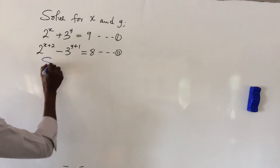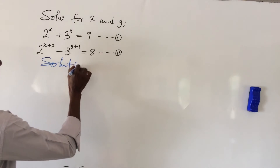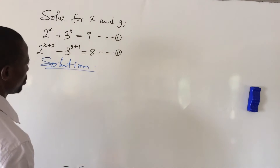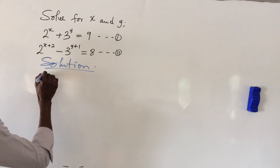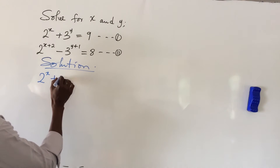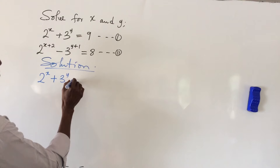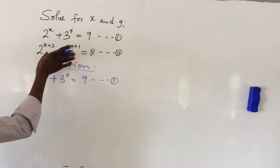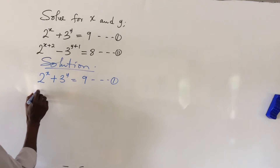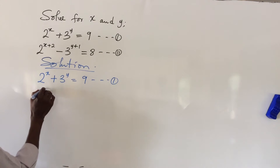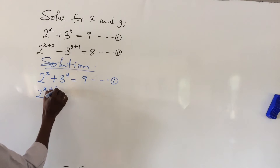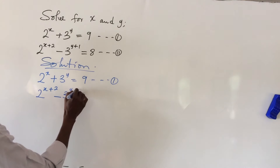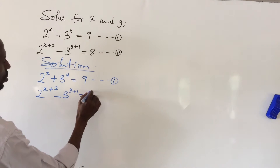Let's take our solution. We write our equation one, which is: 2 to the power of x plus 3 to the power of y equals 9. Then we have equation two, which is: 2 to the power of (x plus 2) minus 3 to the power of (y plus 1) equals 8.